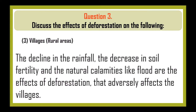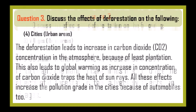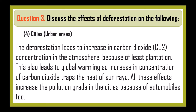Villages (rural areas): The decline in rainfall, decrease in soil fertility, and natural calamities like floods are effects of deforestation that adversely affect villages. Cities (urban areas): Deforestation leads to increased CO2 concentration in the atmosphere due to reduced plantation, causing global warming, as increased CO2 traps the heat of sun rays, and these effects increase the pollution grade in cities because of automobiles too.